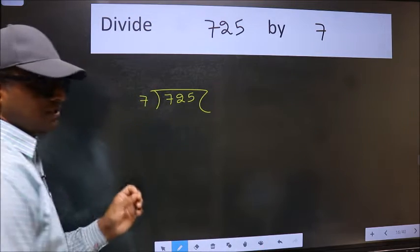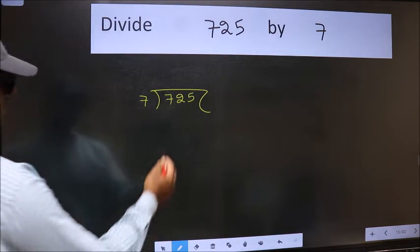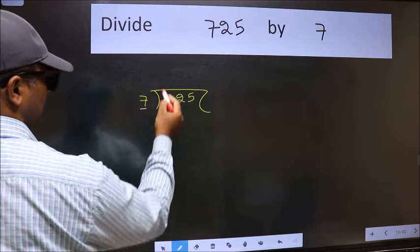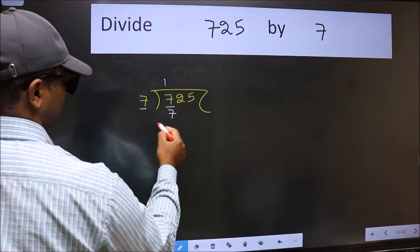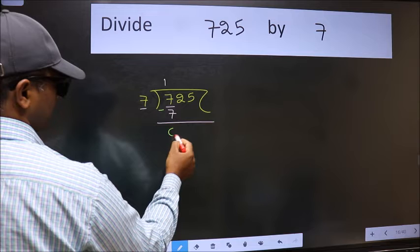This is your step 1. Next, here we have 7 and 7 here. When do we get 7 in the 7 table? 7 ones is 7. Now we should subtract. We get 0.